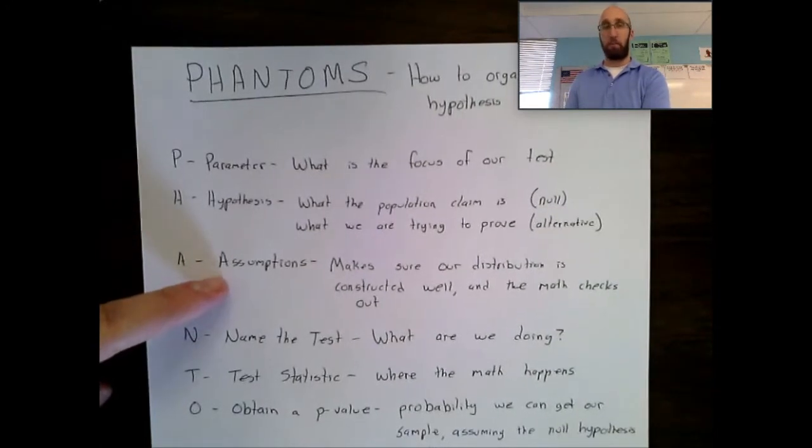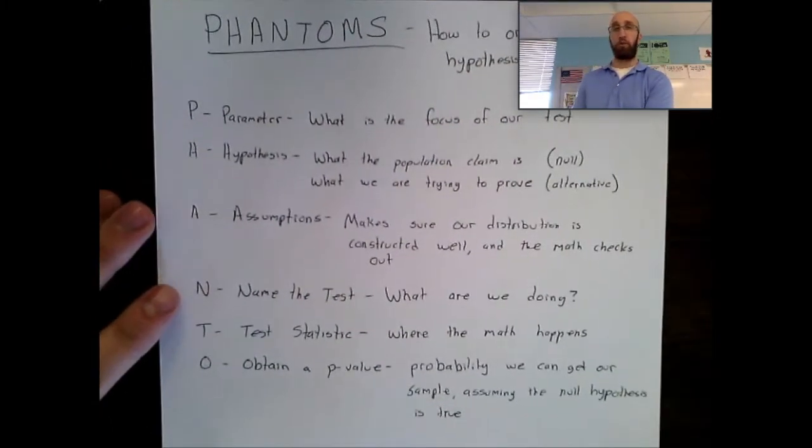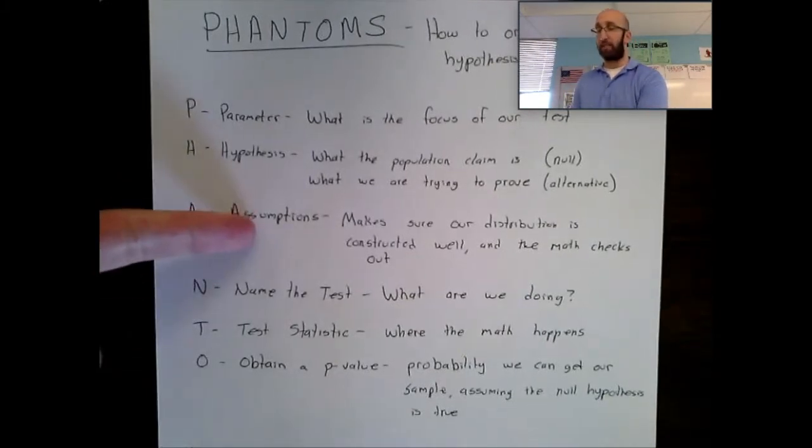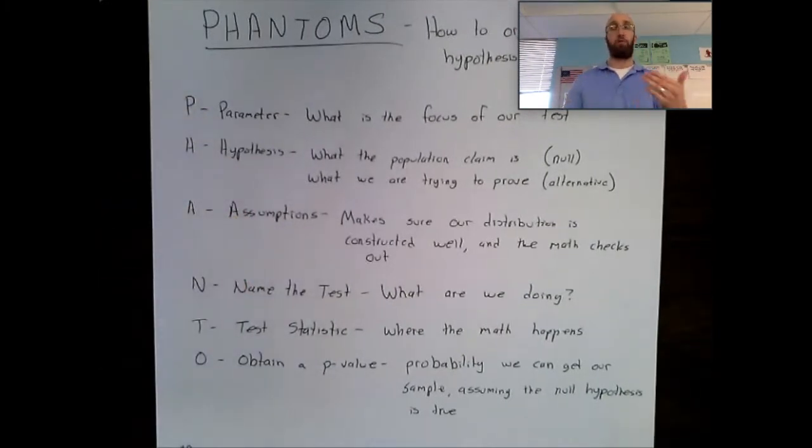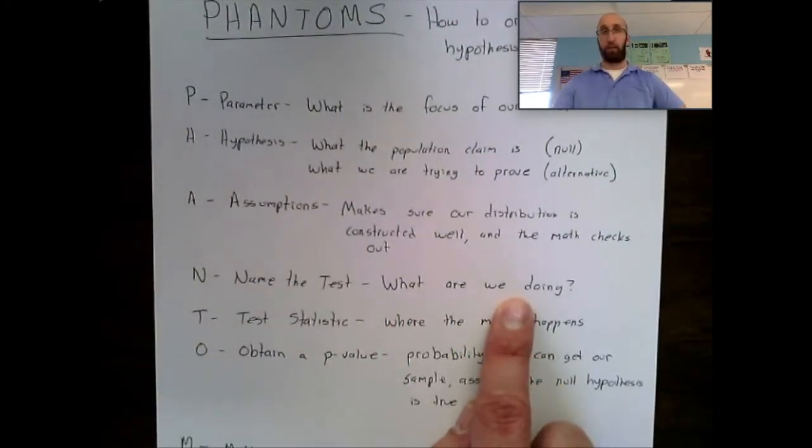Very important. Once we know our assumptions are all checked off and good, that means you can proceed with the problem. So what we're going to do is we're going to move on to N, and we're going to name the test. Because the assumptions are true, I can now do whatever hypothesis test. So we're going to say, what are we doing? What type of hypothesis test are we trying to accomplish?